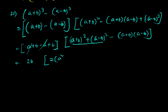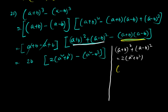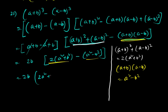Continuing question 21: For (a+b)² + (a–b)² I use the identity (a+b)² + (a–b)² = 2(a² + b²), and for (a+b)(a–b) I use a² – b². So it becomes 2b × [2(a² + b²) – (a² – b²)] = 2b(a² + 3b²).